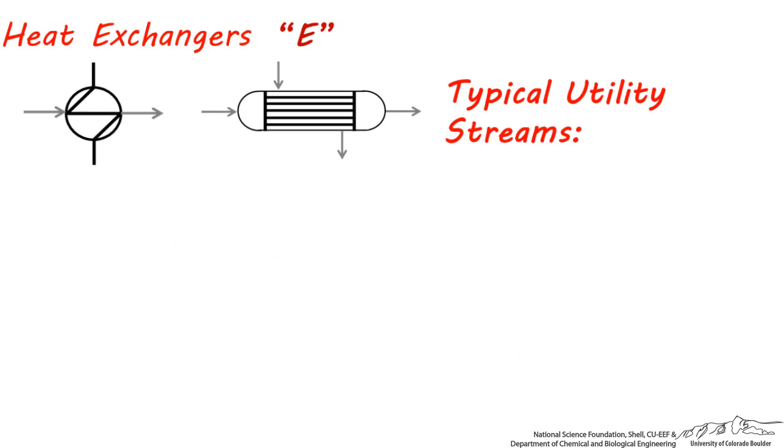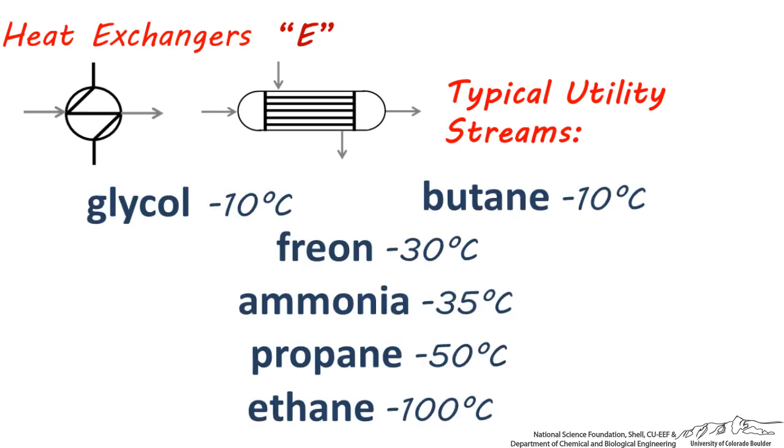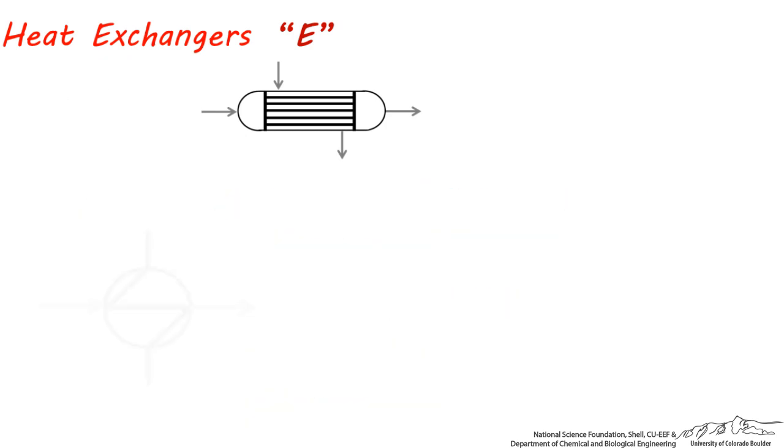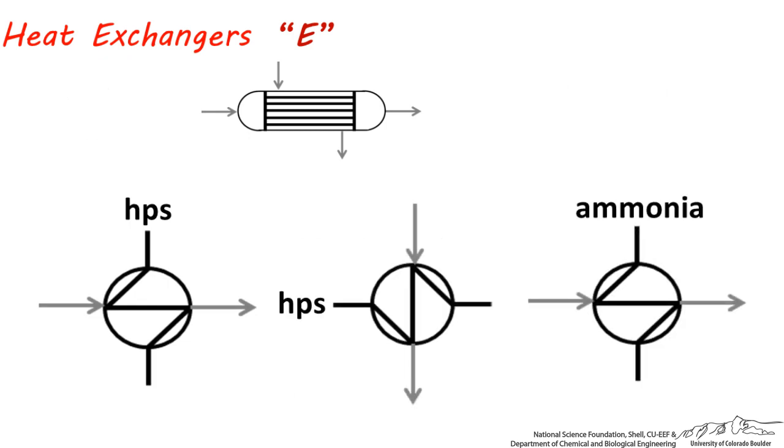There are also a few other utilities you might see in a process flow diagram which don't have a specific letter abbreviation. Here are some examples of how these letter abbreviations should be used as labels for utility streams. Notice that the outgoing stream is not labeled since utility streams are only used for heating or cooling.